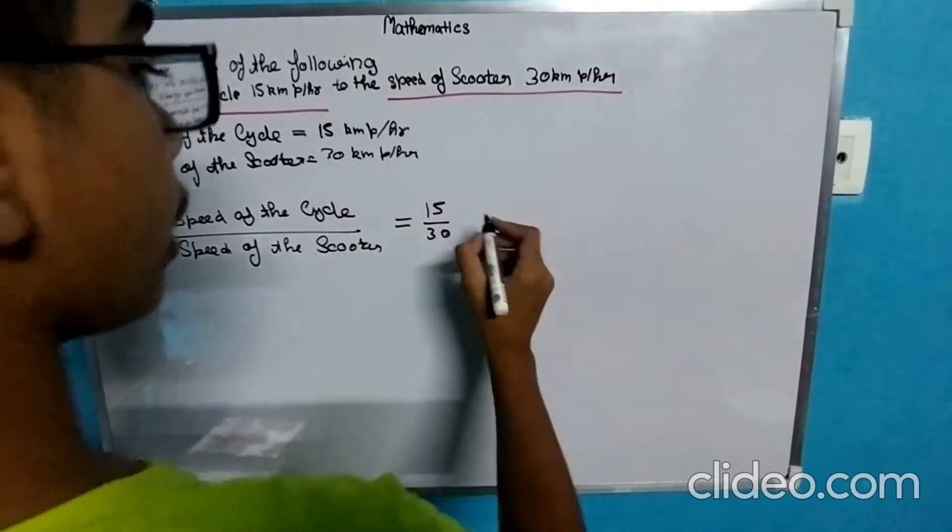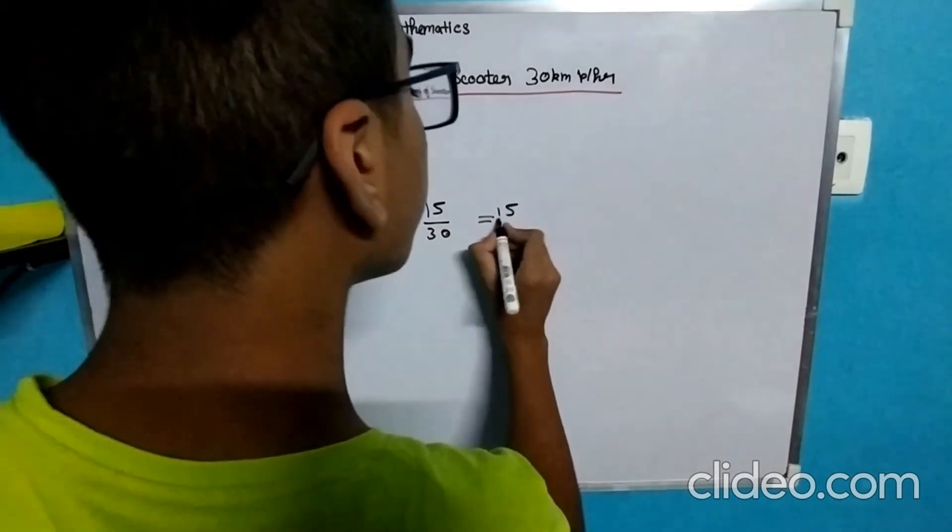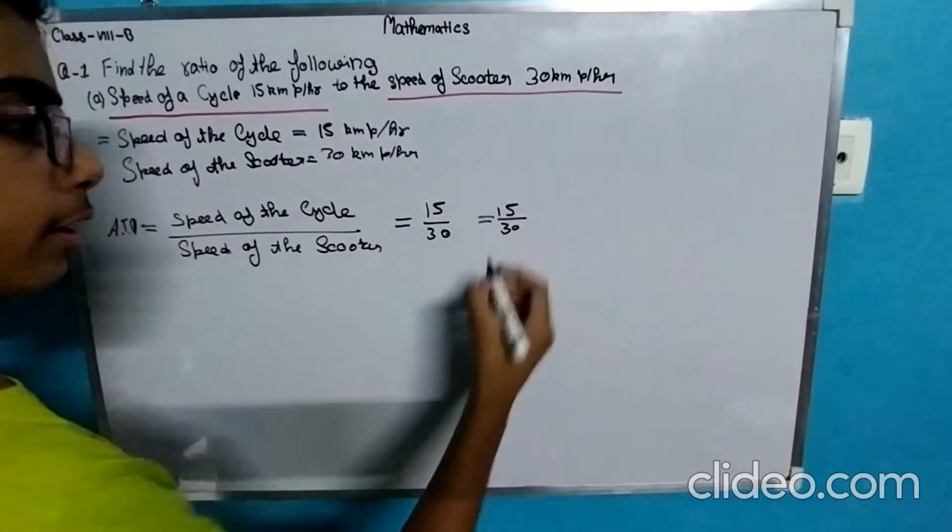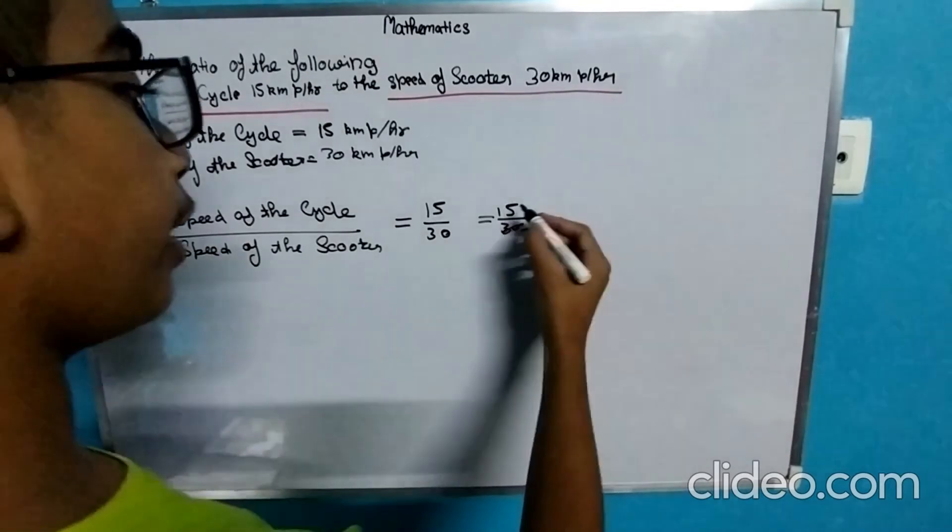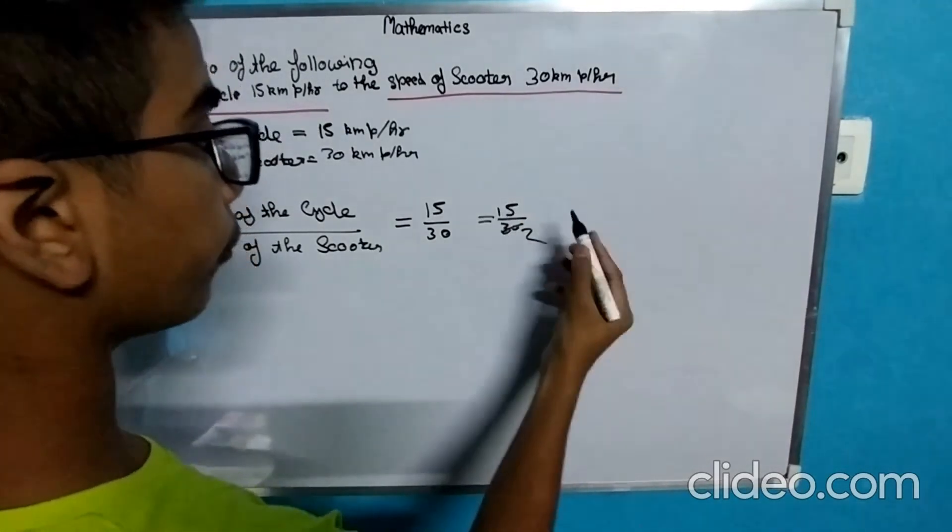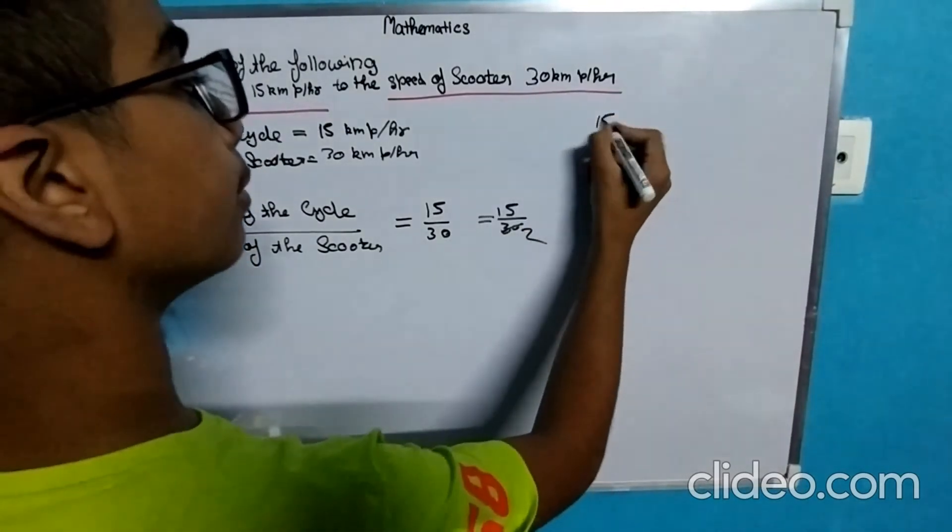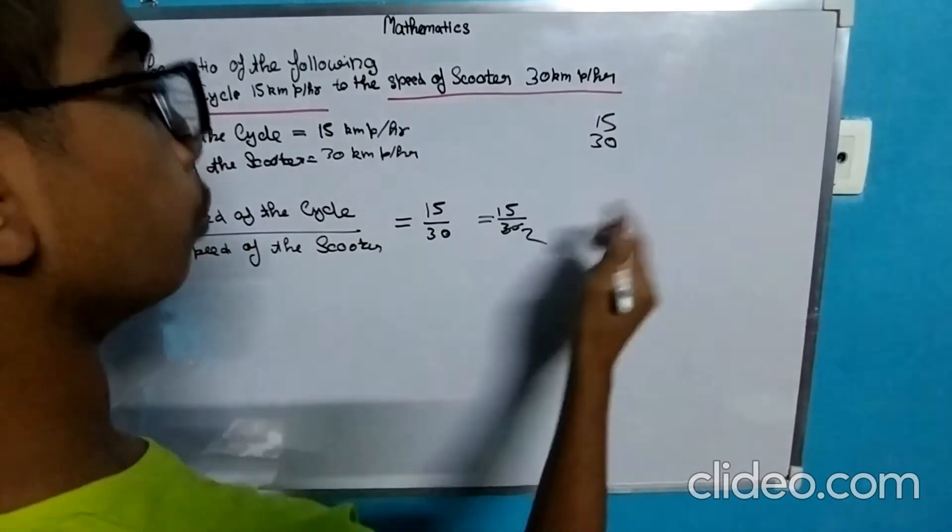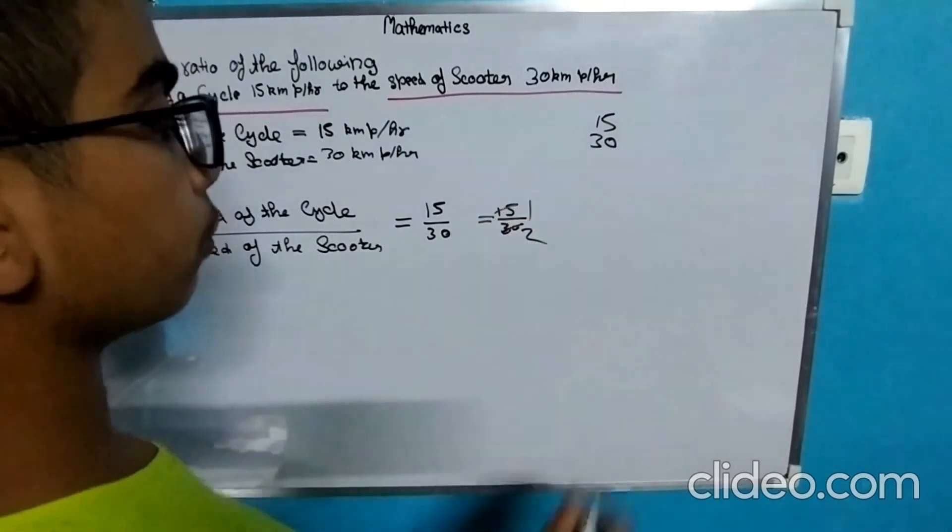Now we are going to simplify these values. We will be dividing it with 15. In the 15 table, 30 comes on 2 and 15 comes on 1, so our